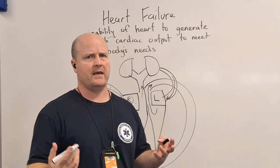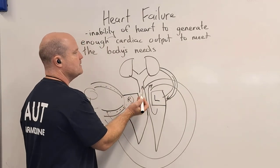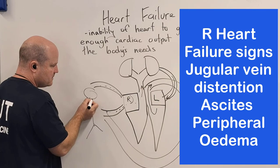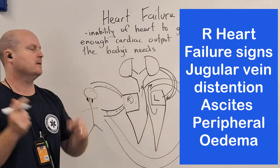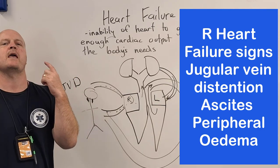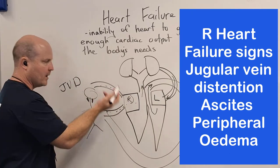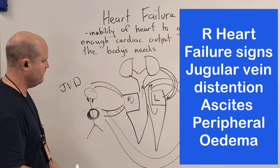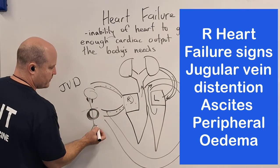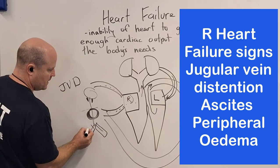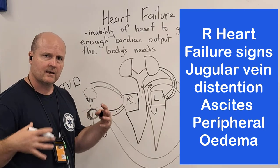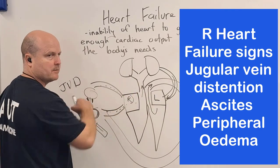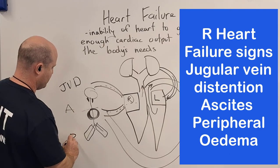Now let's think about symptoms. On the right side, if we're getting less blood going to the lungs and it's backing up into the body — we'll notice the jugular veins start to get full of blood, so we get jugular vein distension, bulging out. Then if blood is building up around the stomach, we get edema or swelling through the abdomen, called ascites. And if blood is building up in our peripheral circulation, it goes wherever gravity takes it — so if the feet are down, we get peripheral edema, swelling of the legs.